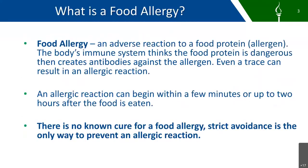What is a food allergy? Food allergies are the adverse reaction to a food protein, which is the allergen. The body's immune system thinks the food protein is dangerous, then it creates antibodies against the allergen. That's when the person with the food allergy begins to have a reaction. Even a trace can result in an allergic reaction, so it's a good idea to develop plans for preventing an allergic reaction and procedures for responding to food allergy emergencies.